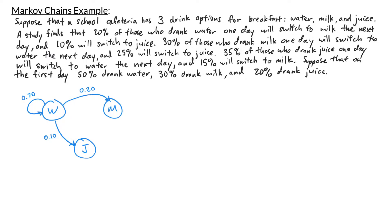We're told that 30% of those who drank milk one day will switch to water the next day, so I draw an arrow from milk to water labeled 0.30. And 25% will switch to juice, so I draw an arrow from milk to juice labeled 0.25. That accounts for 55% of those who drank milk, so the remaining 45% will stick with milk the next day.